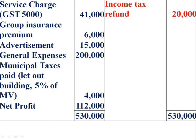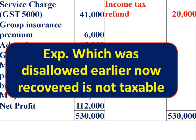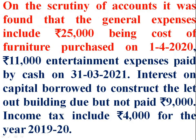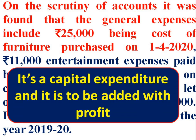Now we go to adjustments. On scrutiny of accounts, it was found that general expenses include Rs. 25,000 being the cost of furniture purchased on 1st April 2020. Since furniture purchasing is a capital expenditure, it should not be debited in the P&L account. Therefore, it is to be cancelled by adding back to the net profit.